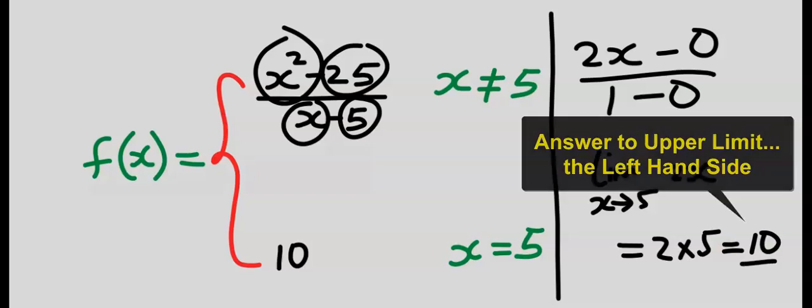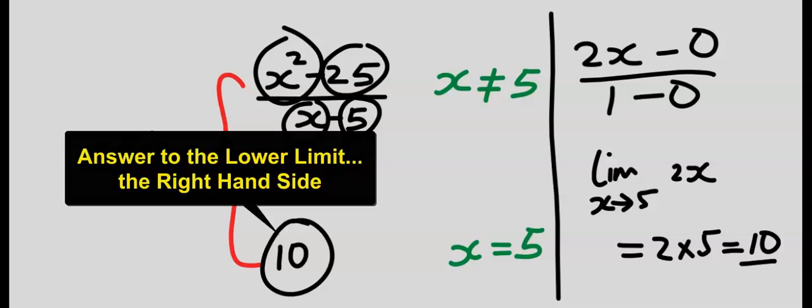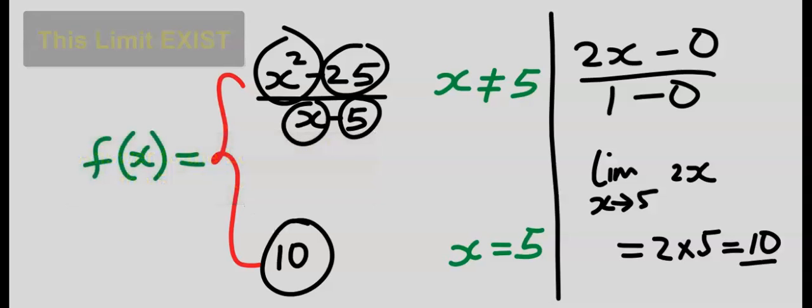The upper limit gives us 10 and the lower limit equally gives us 10, that means this limit exists.